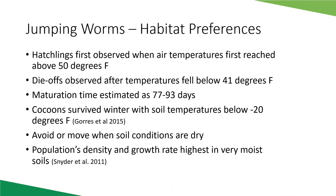Jumping worms can reach maturity fairly quickly — some reports say half the time of European earthworms — allowing two or more hatches per season. This lets them build up very high densities over the course of the season. By late summer and early fall, you can have very high densities of jumping worms. It's estimated it takes 70 to 90 days to mature from hatchling to producing egg cocoons. They prefer moist but well-drained soils with high fertility, where population densities tend to be highest.